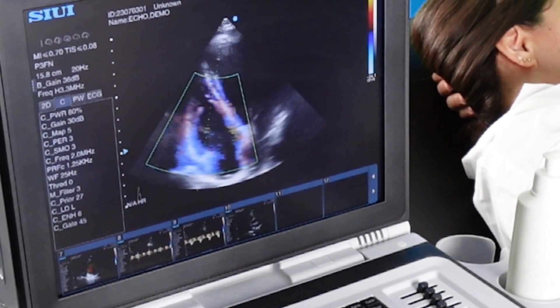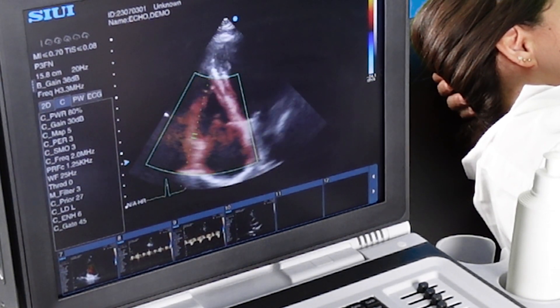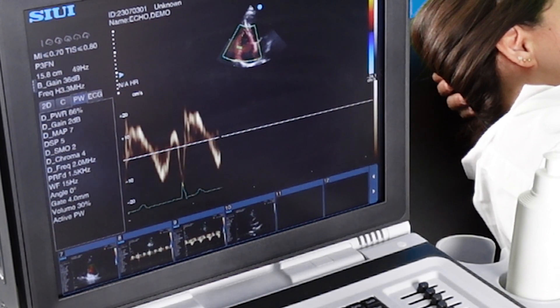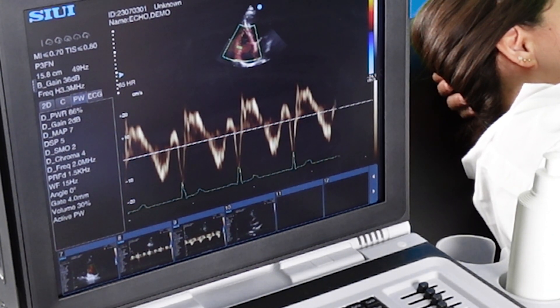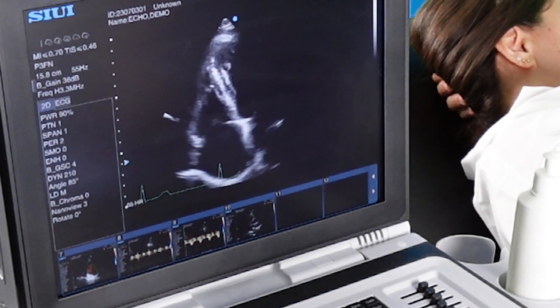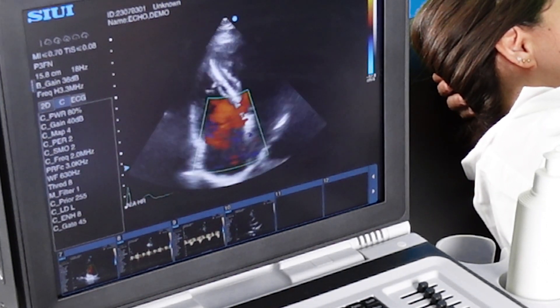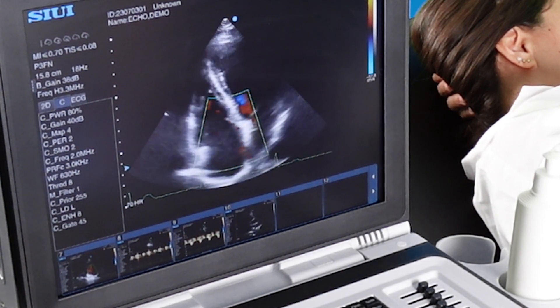And using our Tissue Doppler again, we can obtain a trace here so that we can get S prime. Color Doppler again over the tricuspid valve.